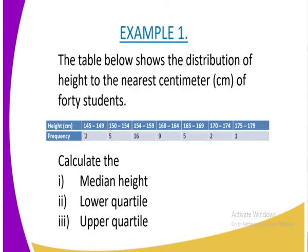We have got a different example here. This is the one that we are going to use. The table below shows the distribution of height to the nearest centimeter of 40 students. So the height of the students is ranging from 145 to 179. So we divide these heights into several classes. The class that is having 145 students, that is the height of 145 to 149, the students are only 2.